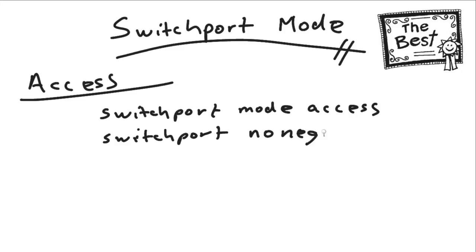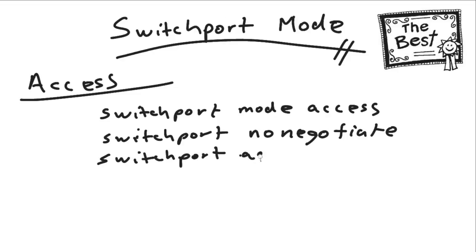We can then say switchport nonegotiate. We are saying we not only want to be an access port, but we don't even want to deal with Dynamic Trunk Protocol. We do not want to listen, we do not want to send DTP frames — we absolutely, stubbornly do not want to participate in the dynamic trunk protocol negotiation process. Then you would say switchport access VLAN and give the particular VLAN that this port is to participate in.